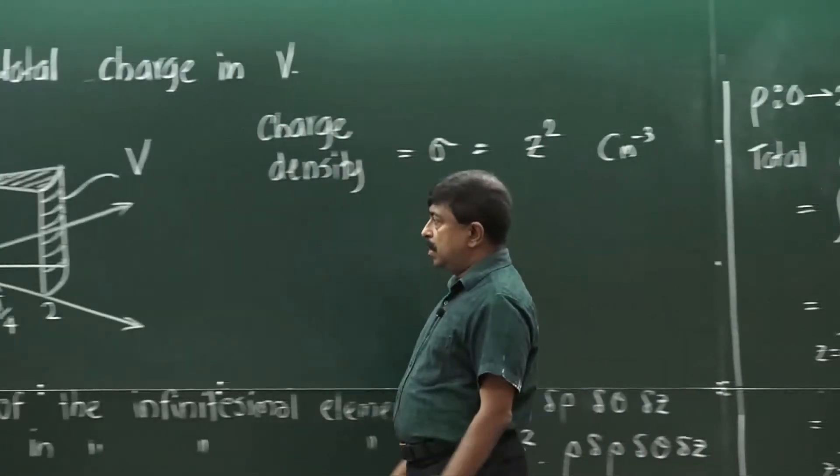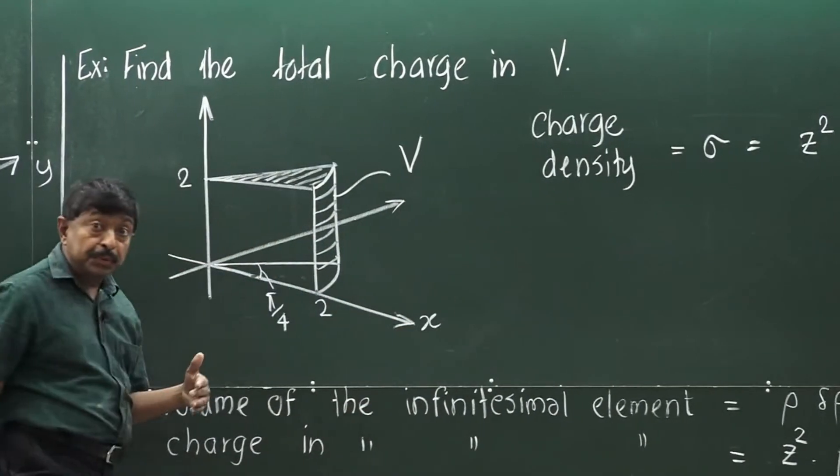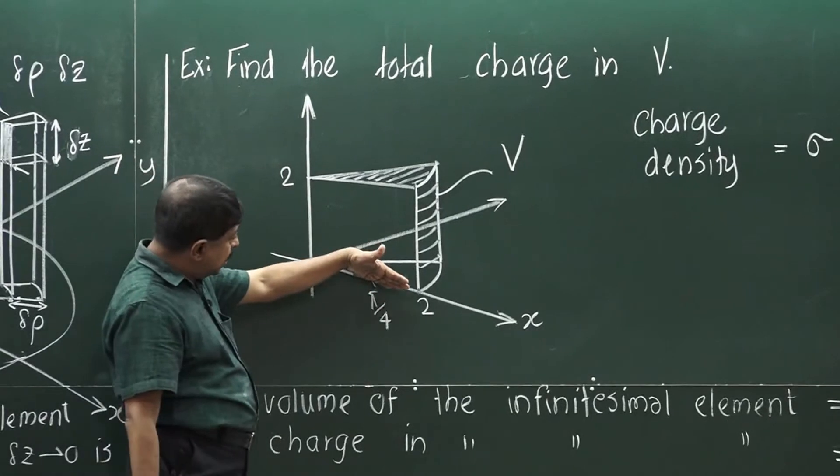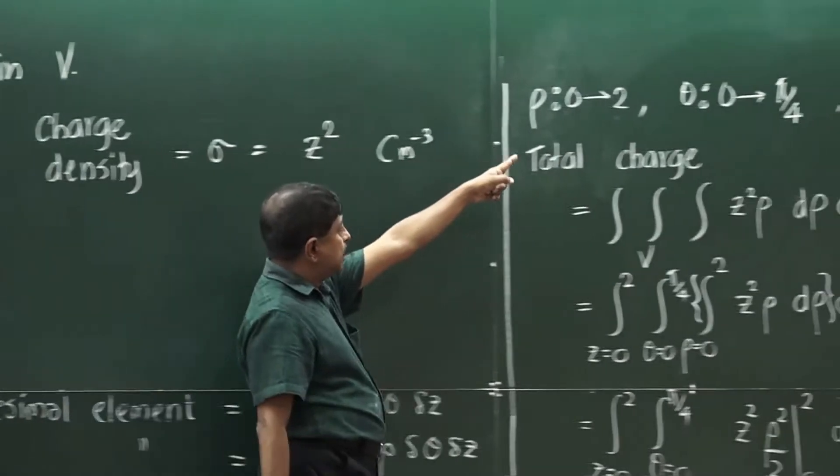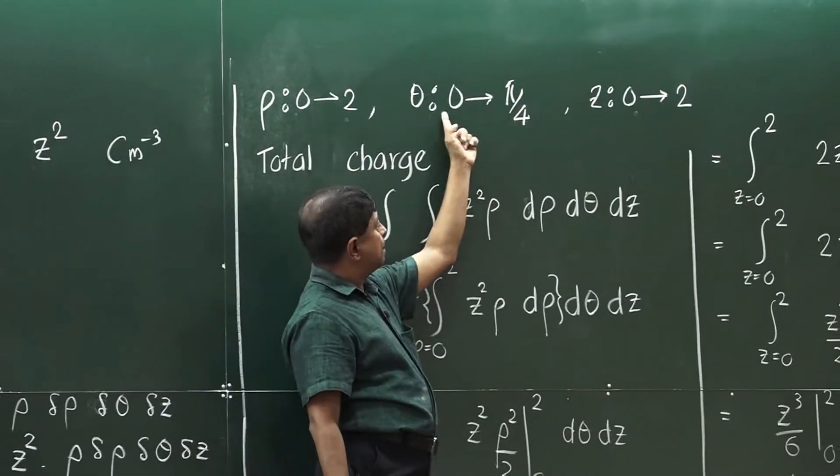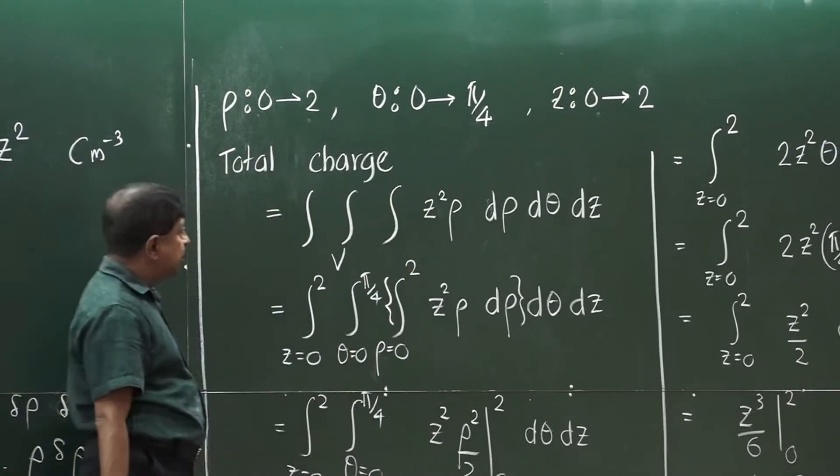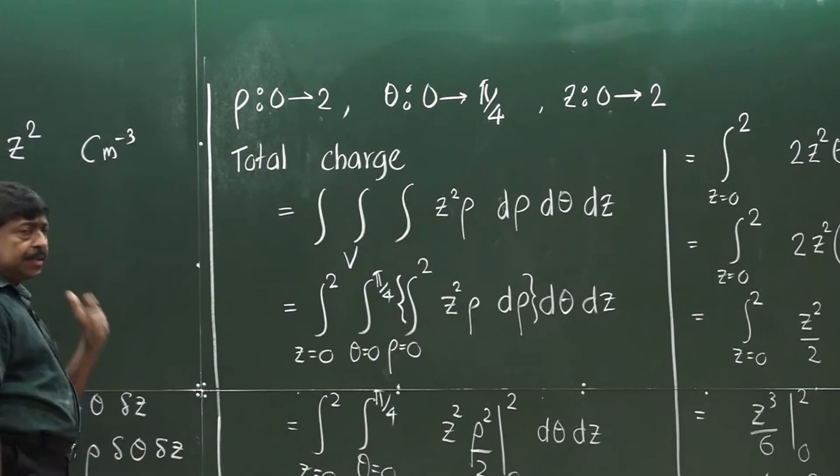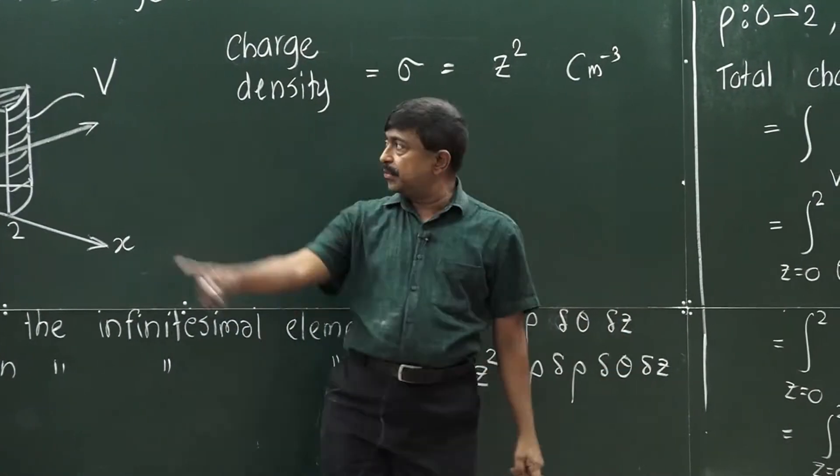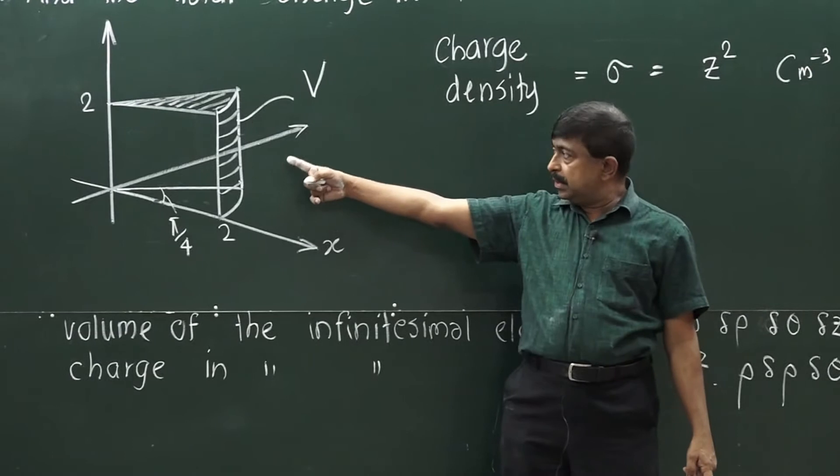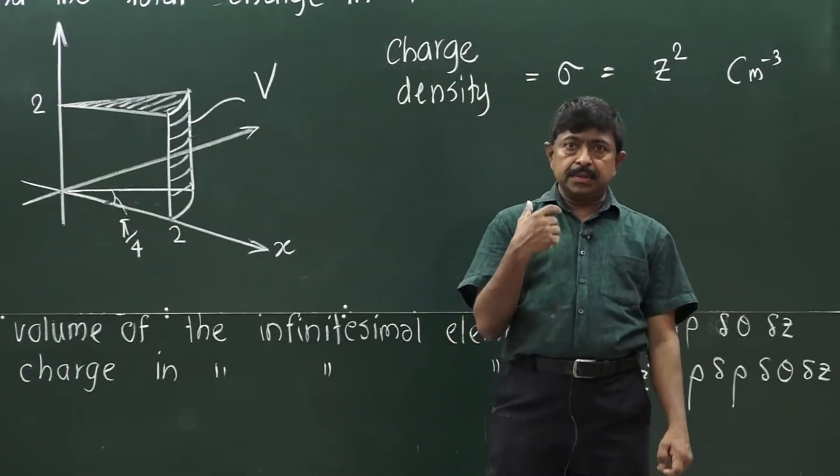And now, the angle from the x-axis, from the positive direction of x-axis, the angle is 5 by 4, 0 to 5 by 4. So, that is how I obtain this one. We have the limits of those three variables. The total charge can be obtained by integrating this one in this domain. This is the domain of integration and we have figured out the limits.